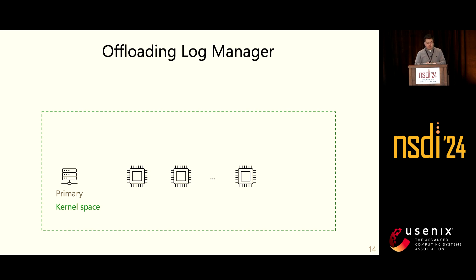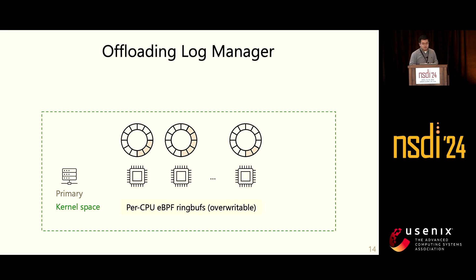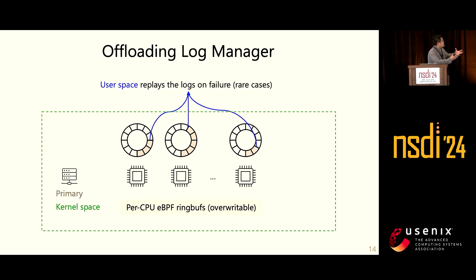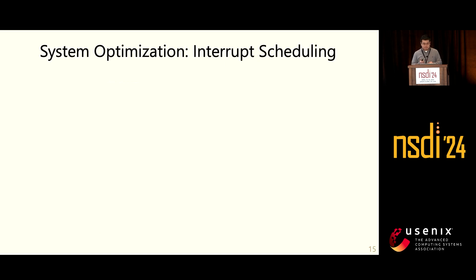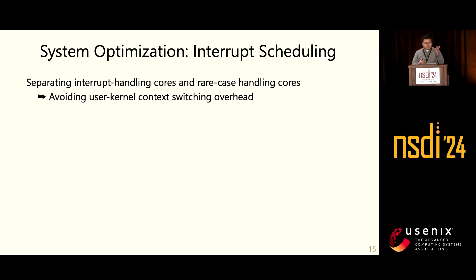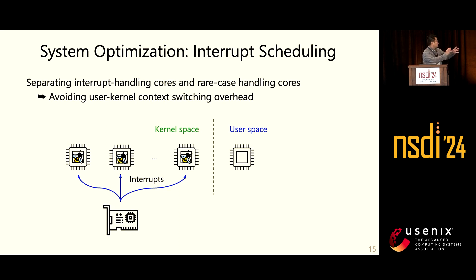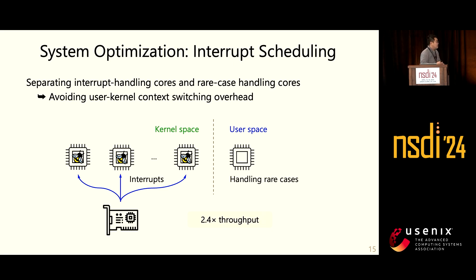The last component is the write-ahead log manager. We maintain a set of per-core eBPF ring buffers in kernel space where log entries are appended. When user space needs to do failure recovery, it replays these logs. The ring buffer avoids cross-core communication and synchronization overhead, making it very efficient. We also did system-level optimizations: we separate interrupt-handling cores from rare-case-handling cores to avoid user-kernel context switching overhead. One set of cores handles interrupts and runs eBPF programs, while another set handles rare cases, so each core only stays in the kernel or only stays in user space. This increases performance by 2.4x in extreme I/O-intensive workloads.